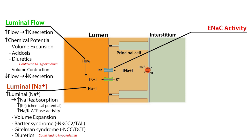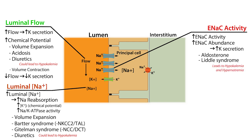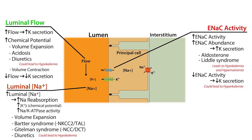Increased ENaC activity or abundance also stimulates potassium secretion through similar mechanisms. The major player increasing ENaC abundance or activity is the steroid hormone aldosterone, which increases ENaC activity and the number of ENaC channels expressed in the apical membrane, leading to increased sodium reabsorption and potassium secretion. Liddle syndrome, a genetic defect in ENaC, similarly leads to increased ENaC abundance in the apical membrane. Both hyperaldosteronism and Liddle syndrome lead to hypokalemia as well as hypernatremia. Conversely, decreases in ENaC activity will decrease potassium secretion and could result in hyperkalemia.